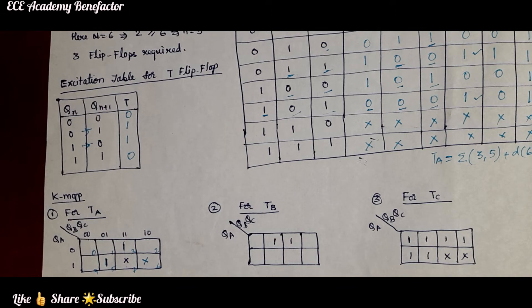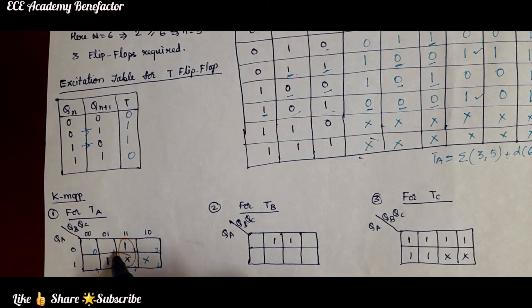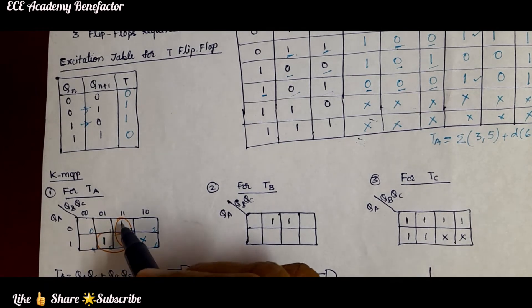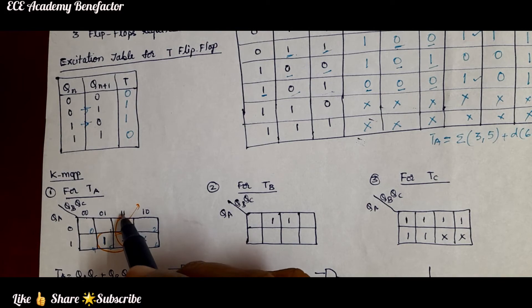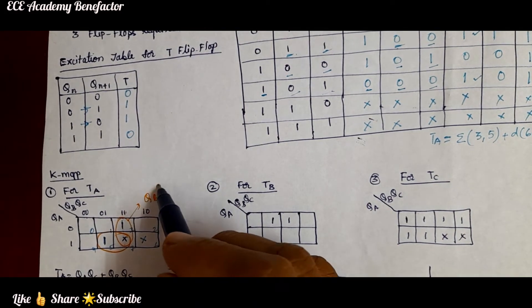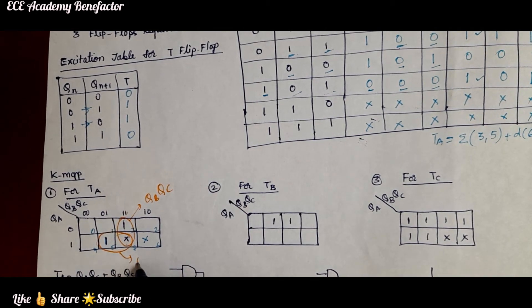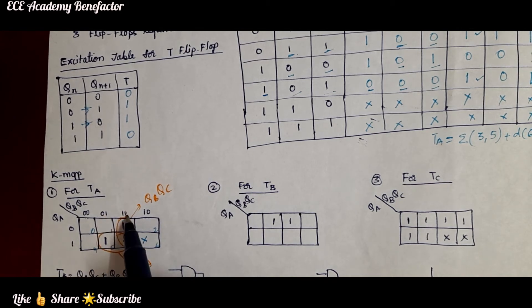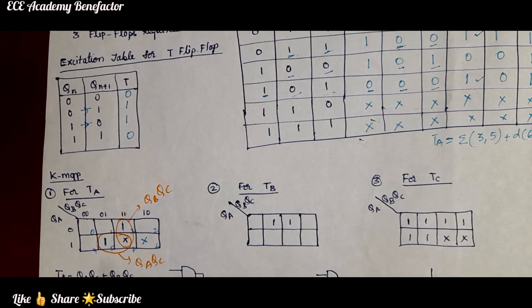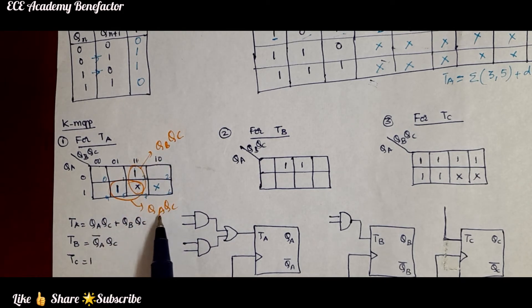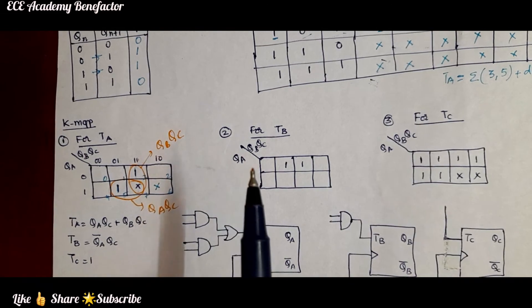From the TA K-map we identify two pairings. One grouping covers QB·QC (cells 3 and 7 using the don't care). The other grouping covers QA·QC (cells 5 and 7 using the don't care). So the simplified Boolean equation for TA is: TA = QA·QC + QB·QC.